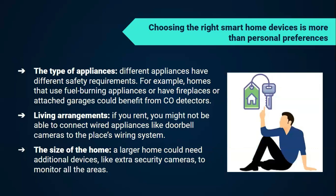Choosing the right smart home device is more than personal preference. Different appliances have different safety requirements — for example, homes that use fuel-burning appliances, have fireplaces, or an attached garage could benefit from CO detectors. Living arrangements also matter: if you rent, you might not be able to connect wired appliances like doorbell cameras to the place's wiring system. And the size of the home matters — a larger home could need additional devices like extra security cameras to monitor all areas.